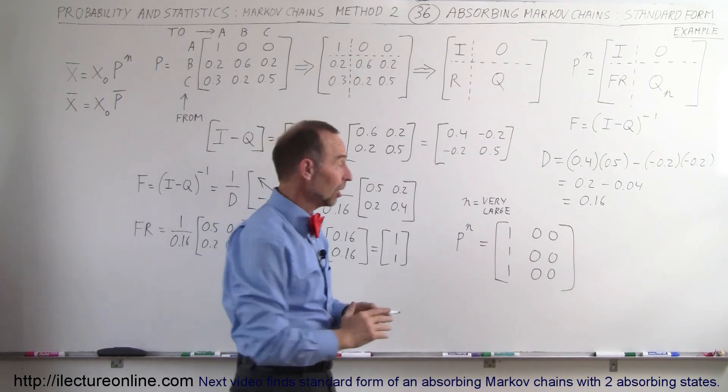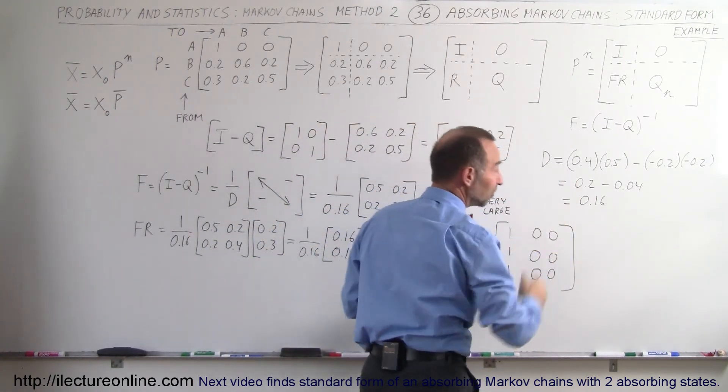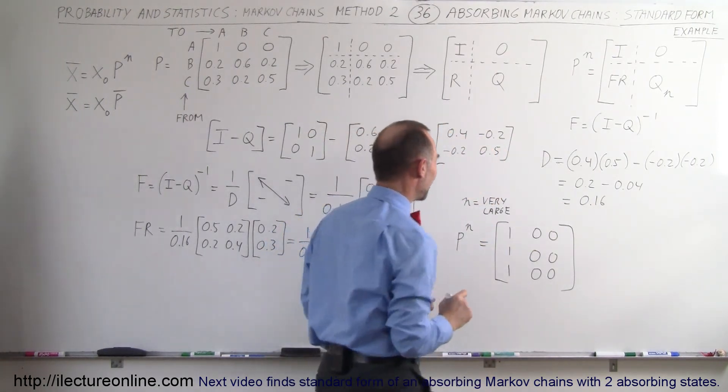Again a final check: the horizontal numbers must add up to 1 and the vertical numbers, well we don't care what they add up to as long as the horizontal numbers add up to 1.